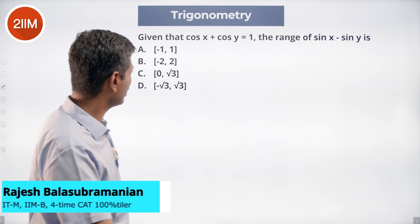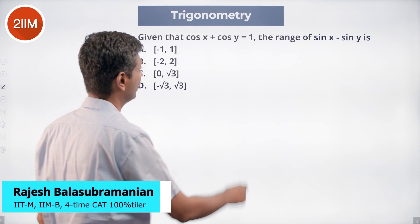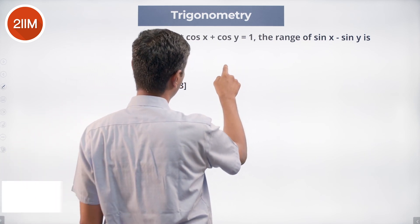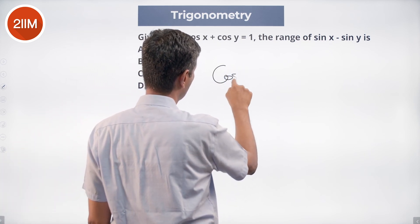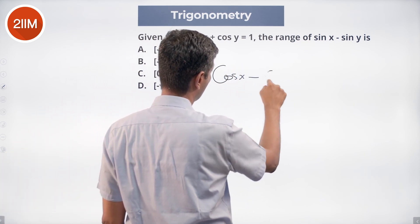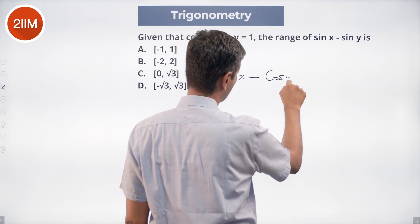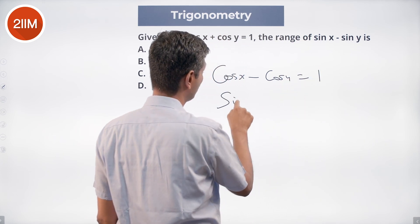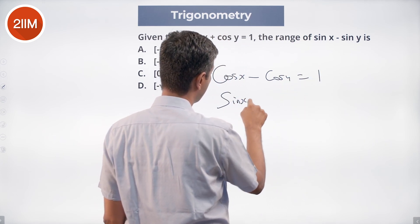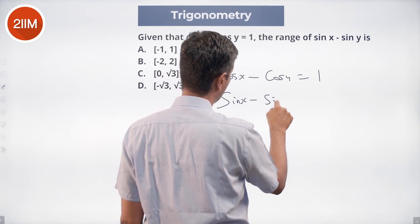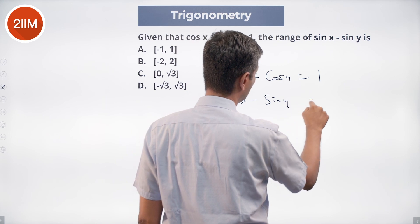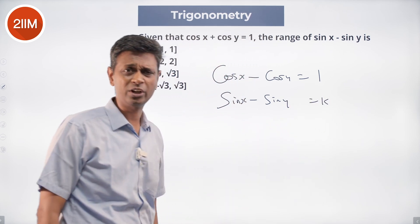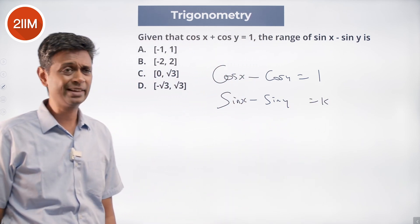Let us attack this. cos x plus cos y is 1. What is the range of sin x minus sin y? Say cos x minus cos y equal to 1. Let us say sin x minus sin y is equal to k. We will think about what range of values k can take.